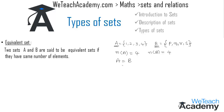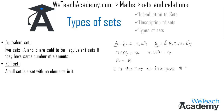A null set is defined as a set with no elements in it. For example, let C be the set of integers between 2 and 3. Since there are no integers between 2 and 3, we get an empty set, and we call this type of set a null set. It is represented by the symbol ∅.